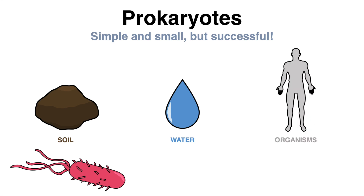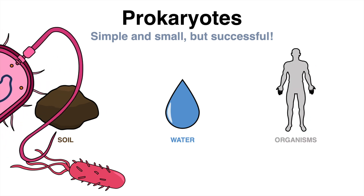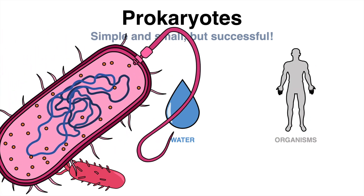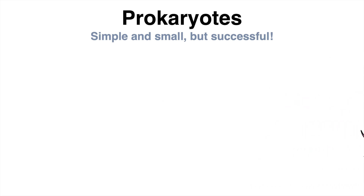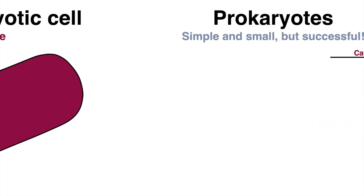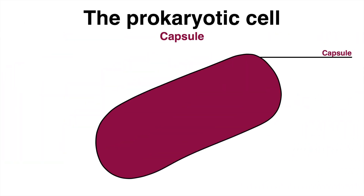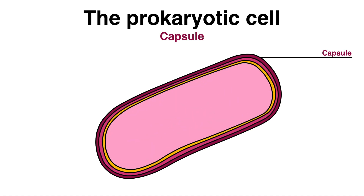The structure of a typical prokaryotic cell consists of several components. Firstly, many bacteria have an outermost layer of carbohydrates called the capsule. The capsule is sticky and helps the cell attach to surfaces in its environment.